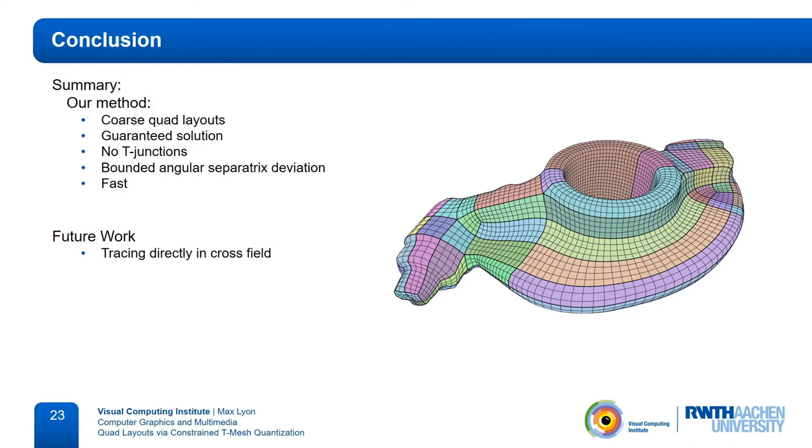For future work, one interesting aspect to look into could be tracing the motorcycle graph directly in a cross field, rather than a seamless parameterization. This comes with a few challenges. For example, it may not be possible to find a consistent and valid quantization for the given input, making our integer linear program infeasible. In these cases, it will be necessary to insert additional singularities, as has been done before in similar settings. However, a guarantee on angular deviation of separatrices can probably not be given in this setting. Another opportunity for improvement could be the relocation of singularities in situations where the exact positioning is not important. Slightly moving the input layout vertices may move them into the valid region, which could lead to simpler layouts. Thanks for your attention.